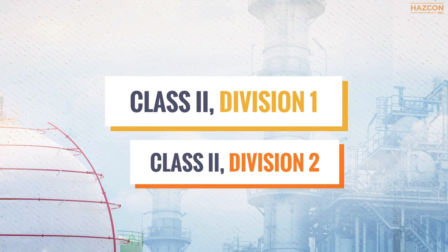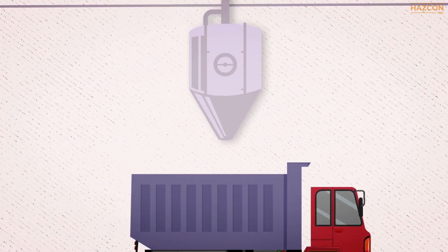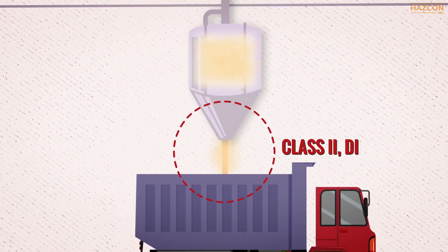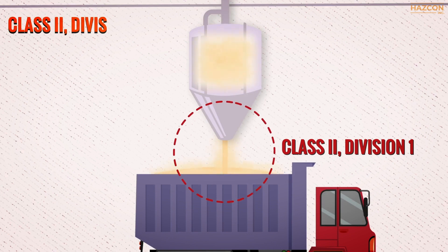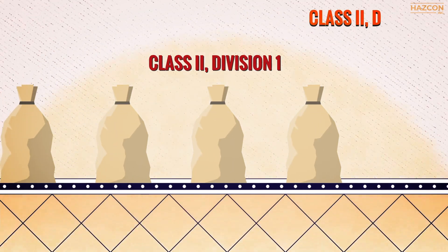In this animation, we will focus on the Class/Division system classification of dust explosive atmospheres — specifically Class 2 Division 1. Class 2 Division 1 is defined as a location in which combustible and explosive dusts are in the air under normal operating conditions and in quantities sufficient to produce explosive or ignitable mixtures.